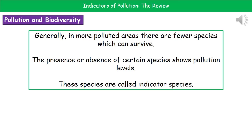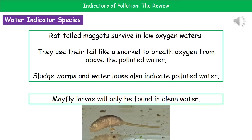If we consider what's going to happen to an environment that is suffering from pollution, generally what we see is that in more polluted areas there are fewer species which can survive. By looking at what species are present and what species are absent, we get an idea of the level of pollution. The species used for this are called indicator species.